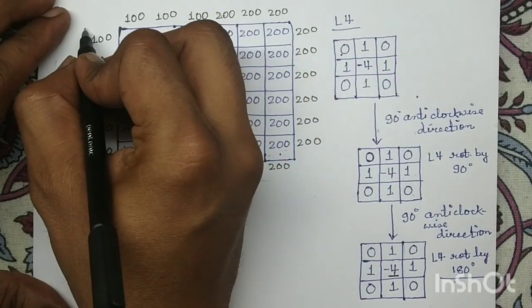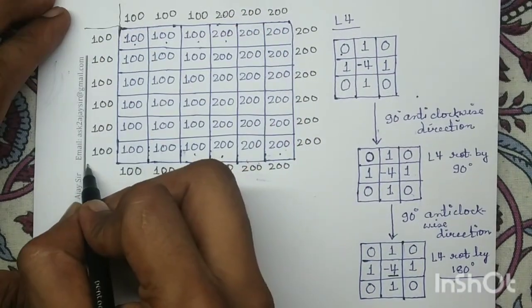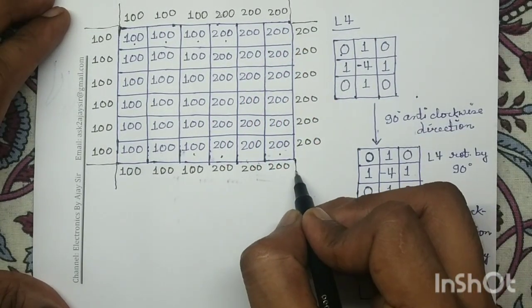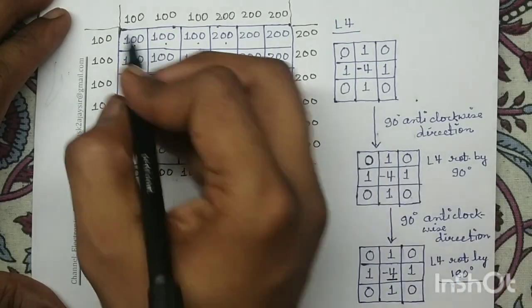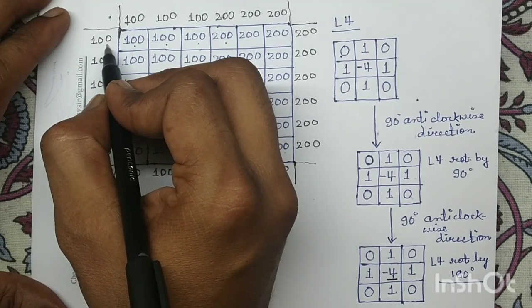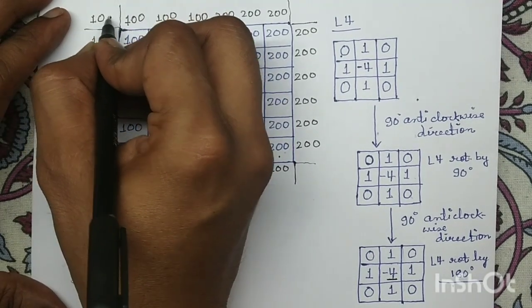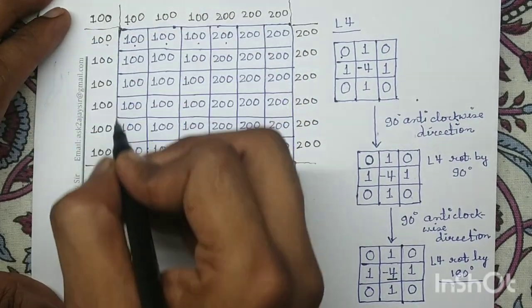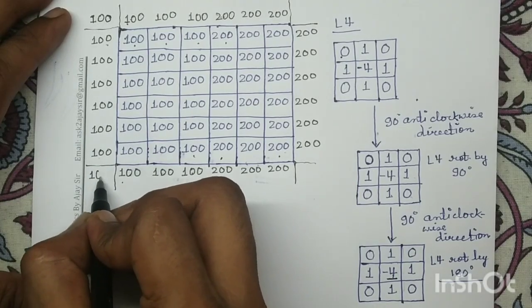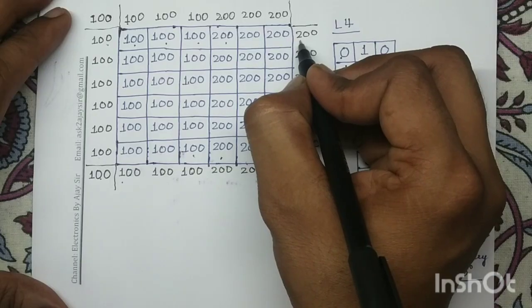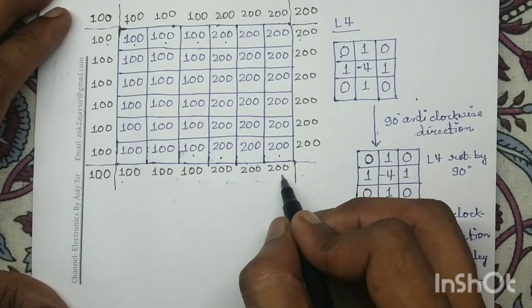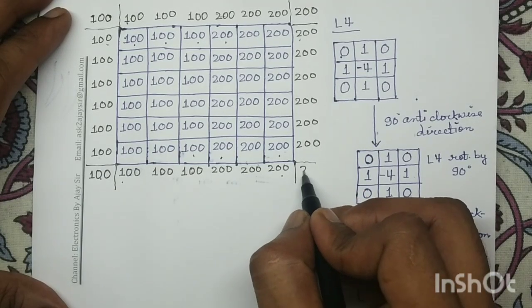Next, we will target the corner positions. At the top-left corner, since both adjacent pixels have the intensity value 100, I write 100. At the top-right corner, both pixels also have intensity value 100, so I write 100. At the bottom-left corner, both pixels have intensity value 200, so I write 200. And at the bottom-right corner, both pixels have intensity value 200, so I write 200.